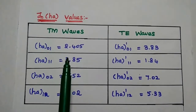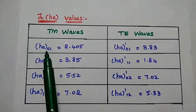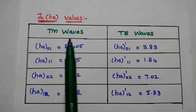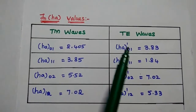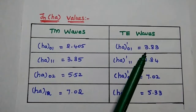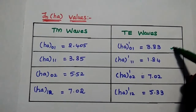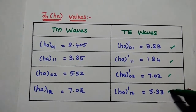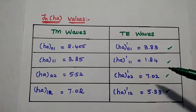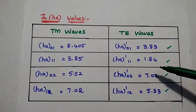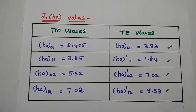The Bessel function values are given here. h'_a of the (0,1) mode for TM waves is 2.405. For TE waves, its value is 3.83. You have to remember all these values — they are very important and sometimes given in examination questions.